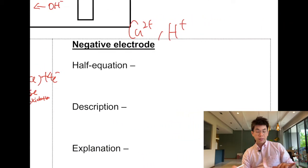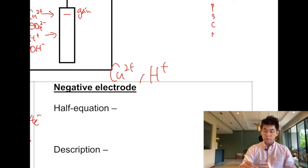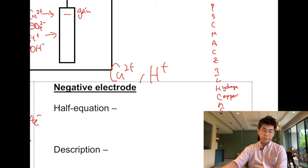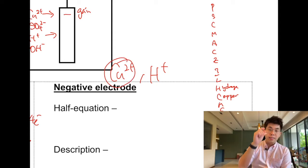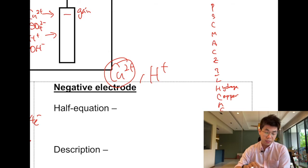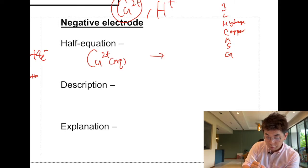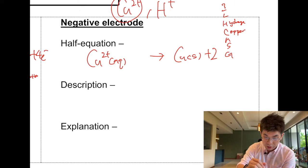Now let's look at the negative electrode. At the negative electrode I now have a new competitor — copper and hydrogen. Hydrogen is more reactive than copper, so copper is less reactive. Last time all the metals we looked at could not compete with hydrogen because hydrogen was less reactive, but now copper is less reactive, so copper will be selected. The less reactive one is selected. So Cu²⁺ (aqueous) will form copper metal.